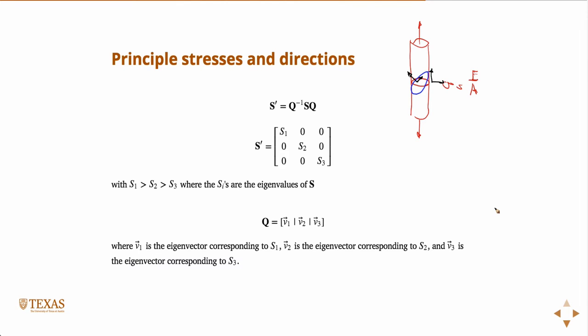we can take our complicated stress tensor that has entries everywhere, and we can rotate it into the proper frame such that it can be described perfectly by a diagonal entry. So it sort of makes it simpler.